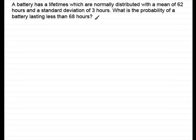Well, the first thing we need to do is to define a random variable, which I'm going to call x. Let x be the random variable lifetime in hours, where x follows a normal distribution with a mean of 62 and a variance of 9. We tend to write the mean as mu and the variance as the standard deviation sigma squared. So if the standard deviation is 3, then 3 squared is 9.